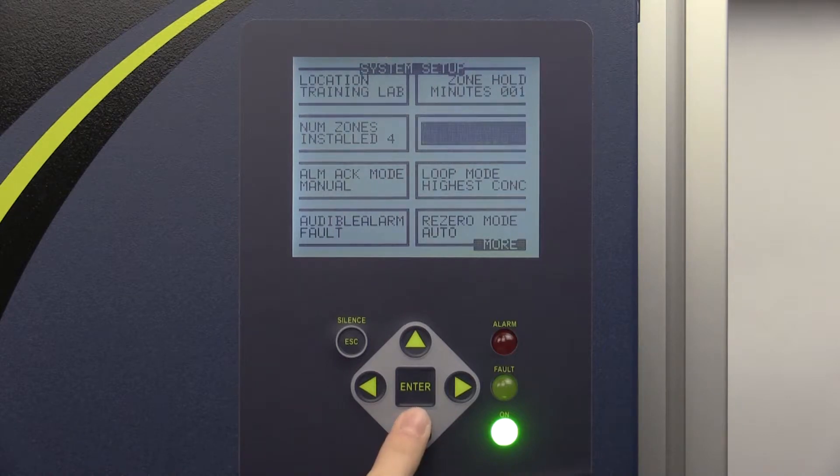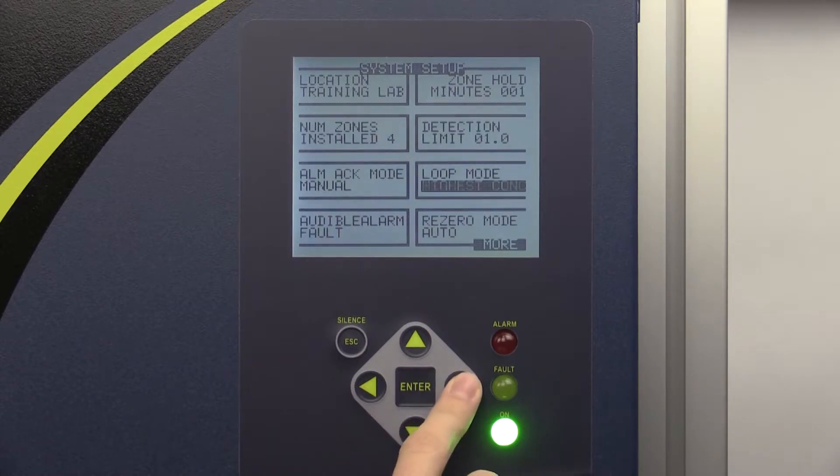Loop mode allows you to set the loop mode of two optional 4 to 20 milliamp outputs. In track zone mode, the device adjusts the zone and PPM outputs to correspond to the latest sampled zone number and its correspondent PPM reading, respectively.